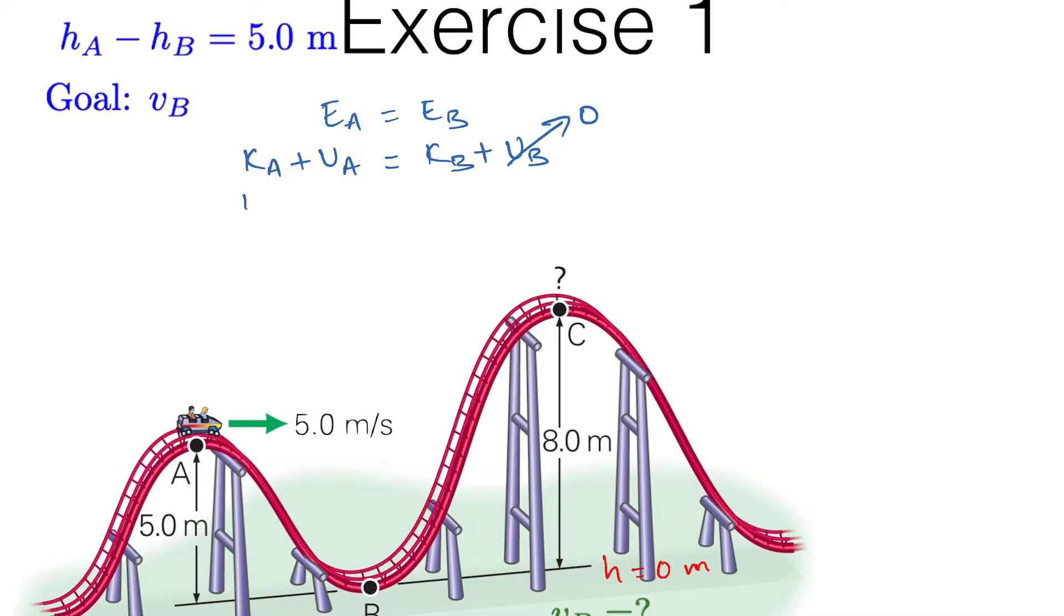So if you put that into equation: one half mass vA squared plus mg height A equals one half mvB squared. We are supposed to find velocity at point B, so mass cancels out. If you multiply both sides by two, you get vA squared plus 2g hA equals vB squared.